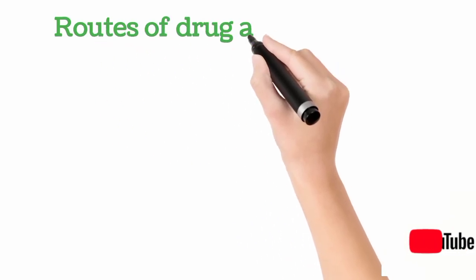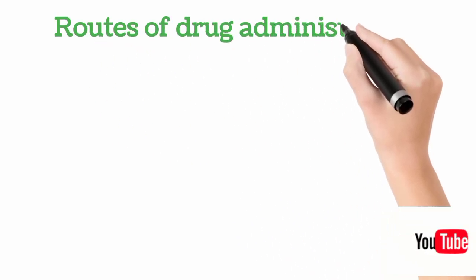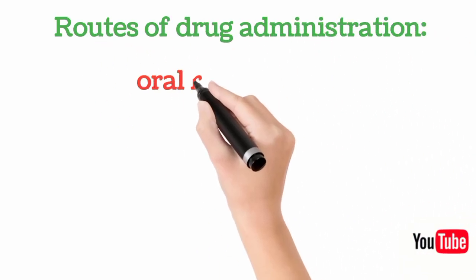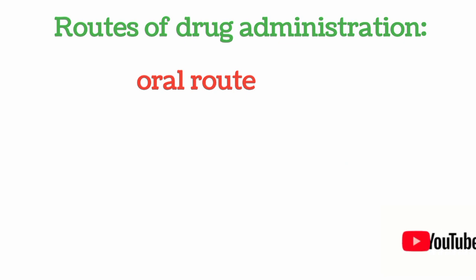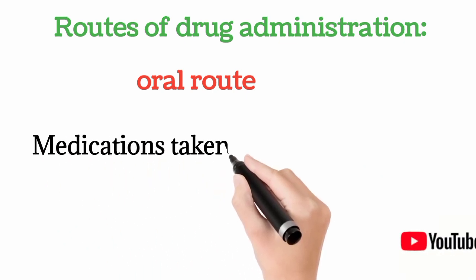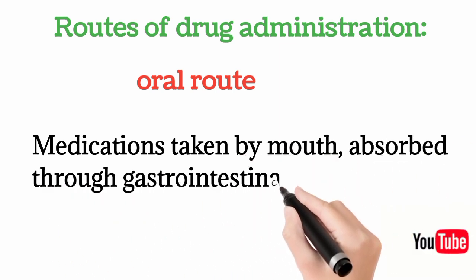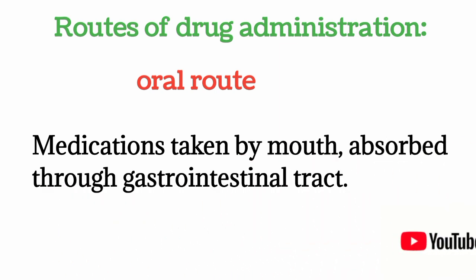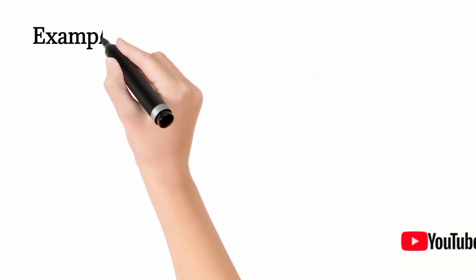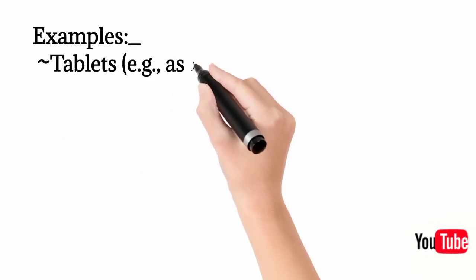Routes of drug administration means that we have various routes from where drugs can be administered. First we start with the oral route. The oral route is when medications are taken by means of mouth, and then they will be absorbed from the gastrointestinal tract — that is your stomach and intestine — and then the drug will reach the bloodstream. So that is the short overview of the oral route.